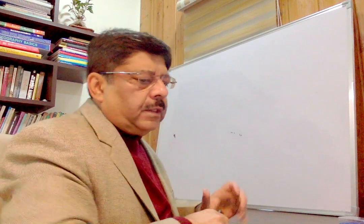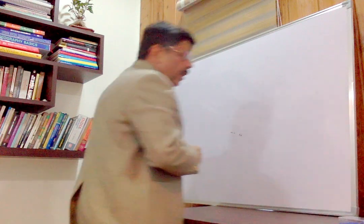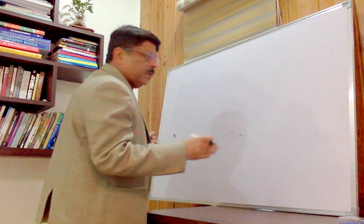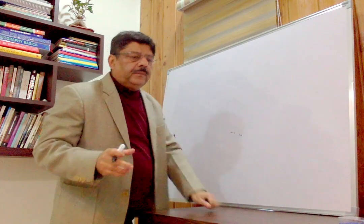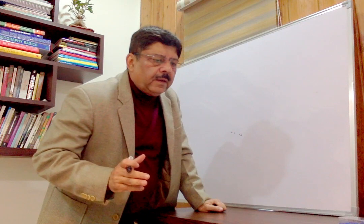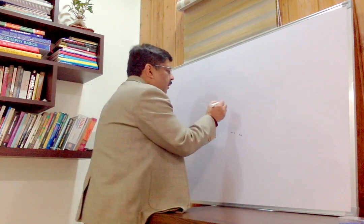We are discussing the gravity model of migration. This is given by some scientists. The formula of gravitational universal law: F is equal to G M1 M2 by R squared.